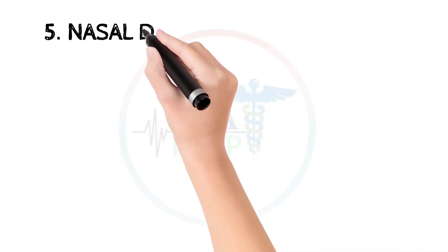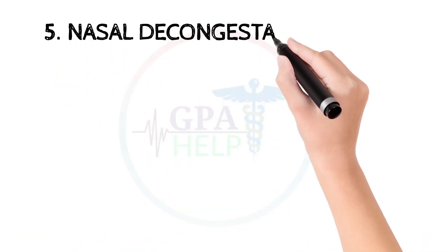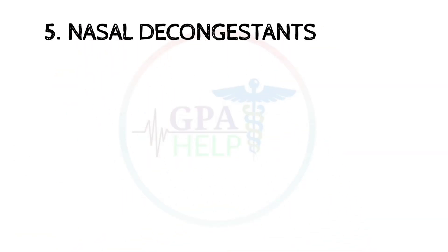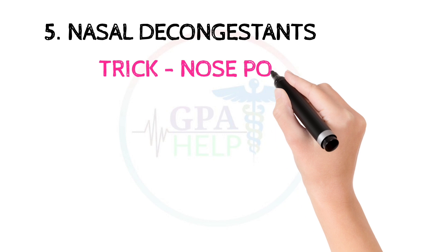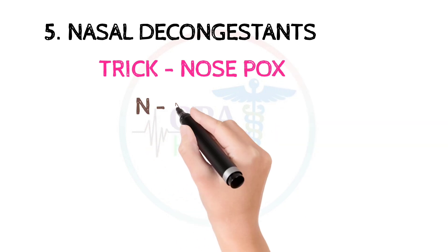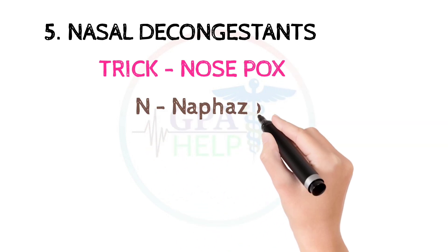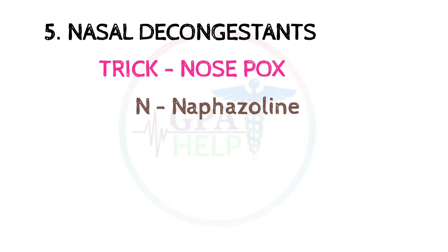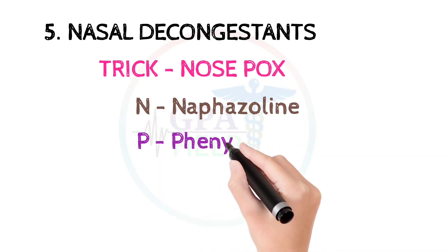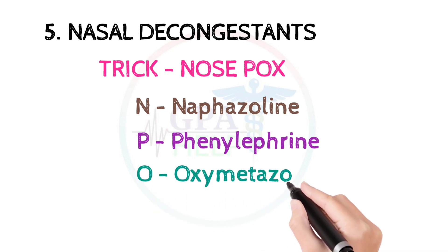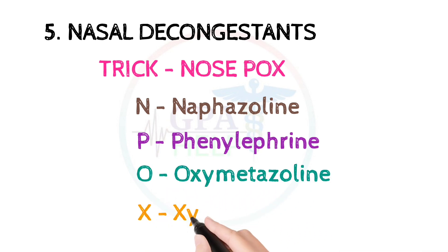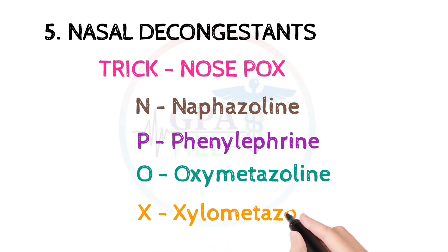The fifth class is nasal decongestants. The trick to remember these drugs is: NPOX (nose pox). N stands for nafazolin, P for phenylephrine, O for oxymetazoline, and X for xylometazoline.